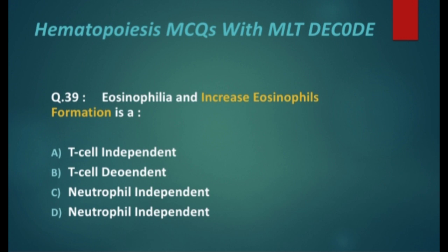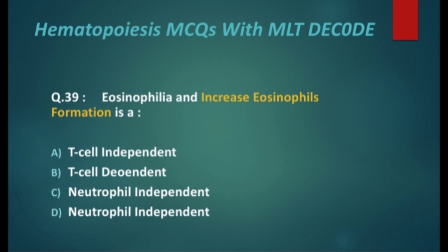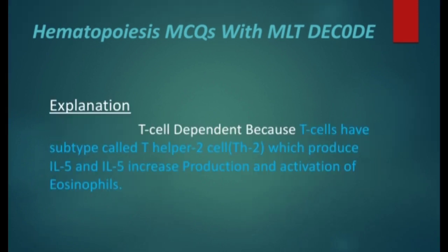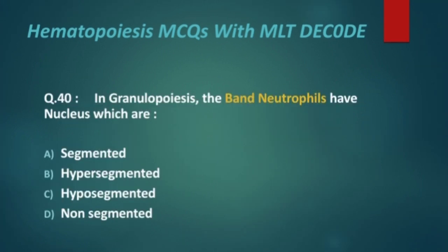Next: eosinophilia and increased eosinophil formation is — options are: T cell independent, T cell dependent, neutrophil independent, and neutrophil dependent. The right answer is T cell dependent. Explanation: T cells have a subtype called T helper 2 cells, which produce interleukin-5, and interleukin-5 increases production and activation of eosinophils. So it is a T cell dependent response.